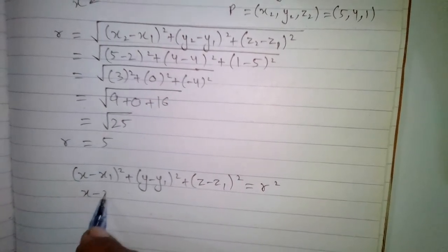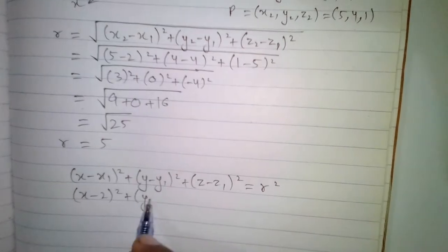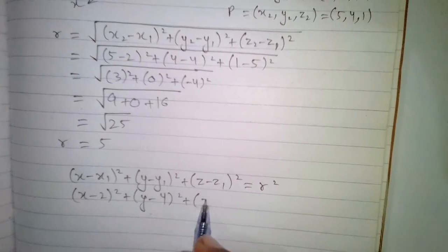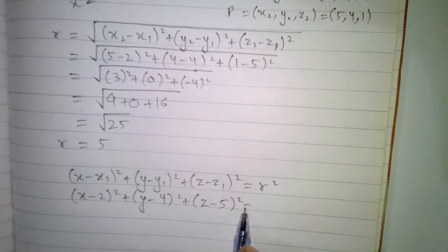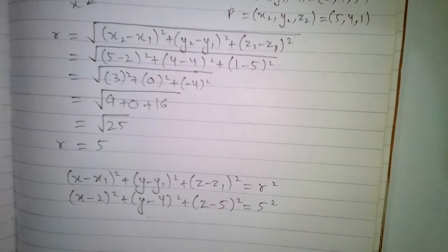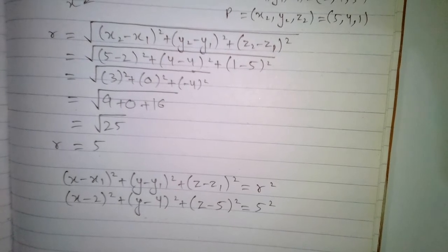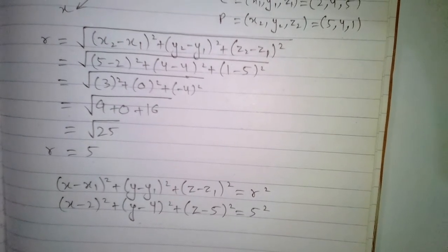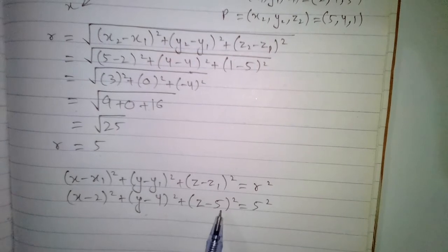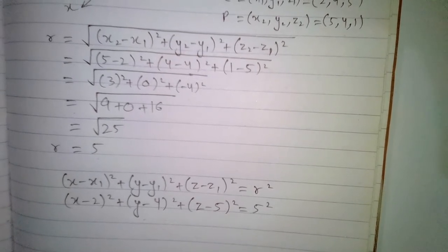We have (x minus 2) whole square plus (y minus 4) whole square plus (z minus 5) whole square equals 5 squared. This is the standard equation of the sphere where its center is (2, 4, 5) and the radius of the sphere is 5.